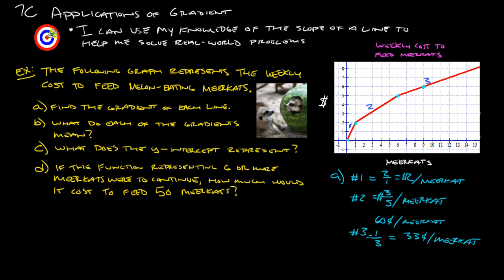Okay, so we've actually kind of taken care of B, because it says what do each of the gradients mean? So again, the first gradient, this first line here, means that you're going to spend $2 extra per meerkat, just basically going from no meerkats to one. And then 60 cents per meerkat when you're adding anywhere between one and six total meerkats. And then the third line here means that you're spending 33 cents more per meerkat for every meerkat you get after six.